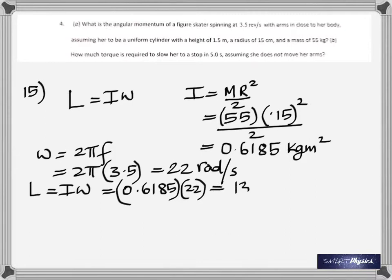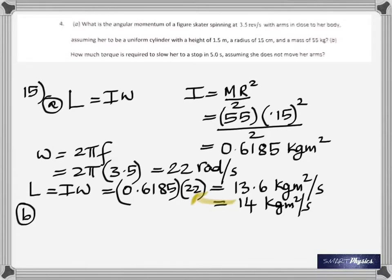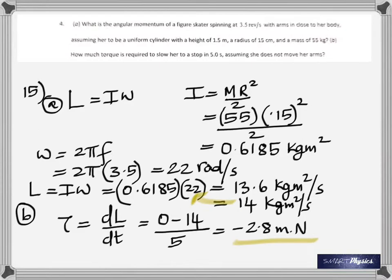L is I omega. Multiply those two numbers and you would get the answer as 13.6 kilogram meters squared per second, approximately 14 considering the significant figures. In the second part, torque is dL by dt, change in angular momentum by time. You get zero minus 14 because change is always final takeaway initial. Final is zero because she has stopped.